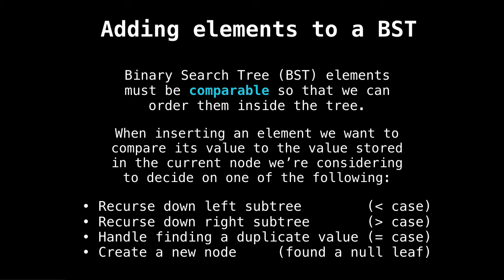And we're going to encounter essentially four cases. So when inserting an element, we want to compare the value to the value of the current node we're considering to do one of the following things. Either we're going to recurse down the left subtree because our element is smaller than the current element, or we're going to recurse down the right subtree because our element is greater than the current element. Or it might be the case that the current element has the same value as the one we're considering, and so we need to handle duplicate values if we're deciding to add duplicate values to our tree or just ignoring that. And lastly, we have the case that we've hit a null node, in which case it's time to create a new node and insert it in our tree.